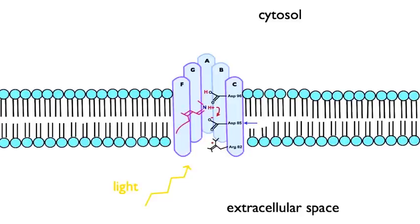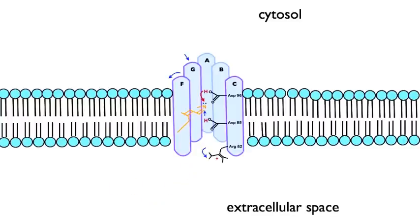The isomerization of retinal changes its color from purple to pink and its configuration from all-trans to 13-cis. The fully deprotonated retinal molecule is now yellow in color. It straightens, pushing against the F helix causing it to tilt.